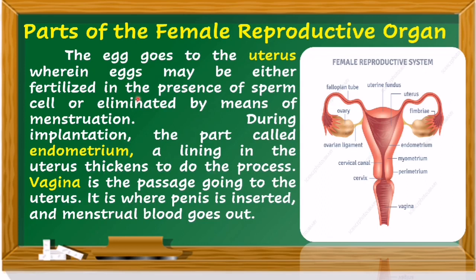The egg goes to the uterus, where eggs may either be fertilized in the presence of a sperm cell, or eliminated by means of menstruation. During implantation, the part called the endometrium lining in the uterus begins the process. The vagina is the passage going to the uterus — it is where the penis is inserted during sexual intercourse and where menstrual blood exits the body.